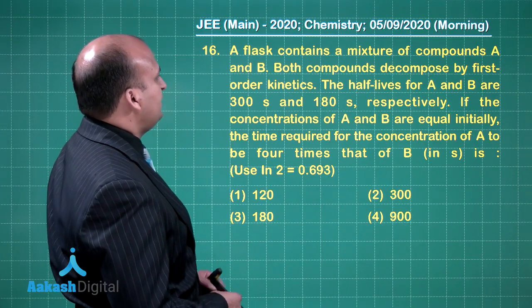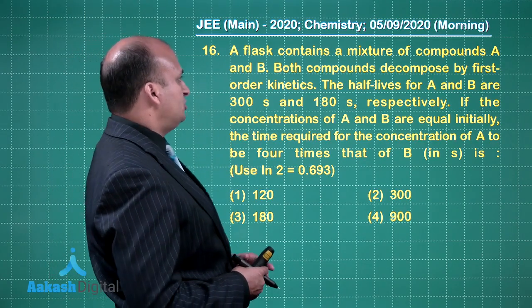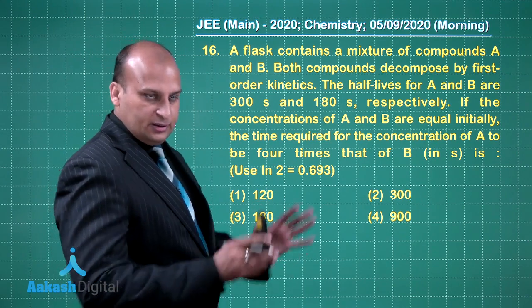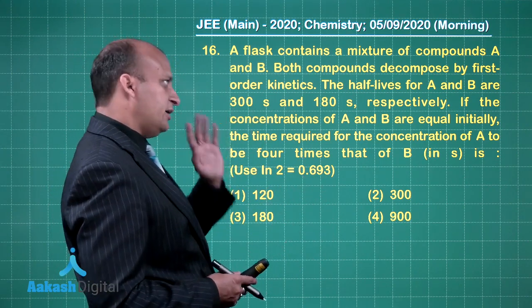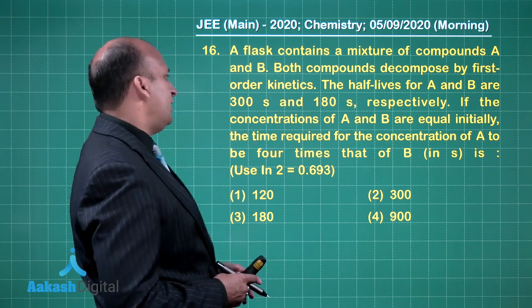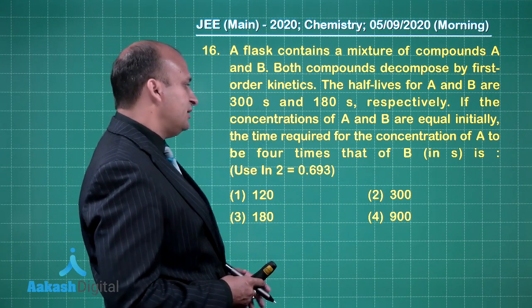Now, let us look at question number 16. A flask contains a mixture of compound A and B. Both compounds decompose by first order kinetics. The half-lives of A and B are 300 seconds and 180 seconds respectively.